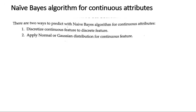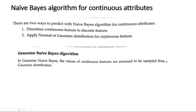The first method is to discretize your continuous values — that means you change continuous values to discrete values. The second technique is to apply the normal or Gaussian distribution for the continuous feature. In this session, we will be using the second method: Gaussian distribution for the continuous feature. Since we are using Gaussian distribution for the continuous attribute, we call it the Gaussian Naive Bayes algorithm.